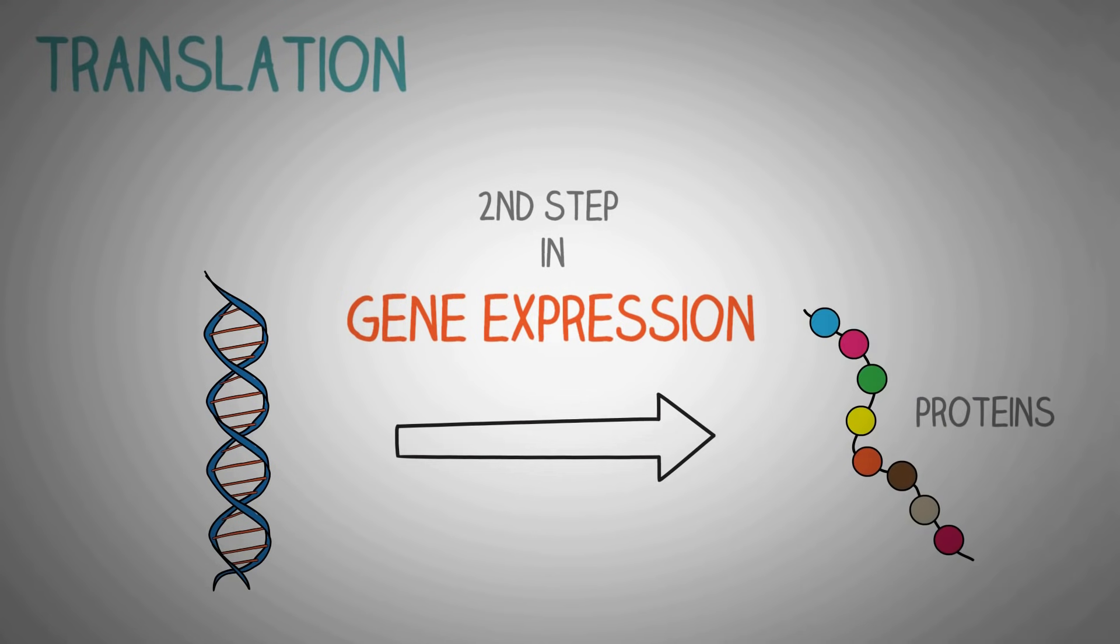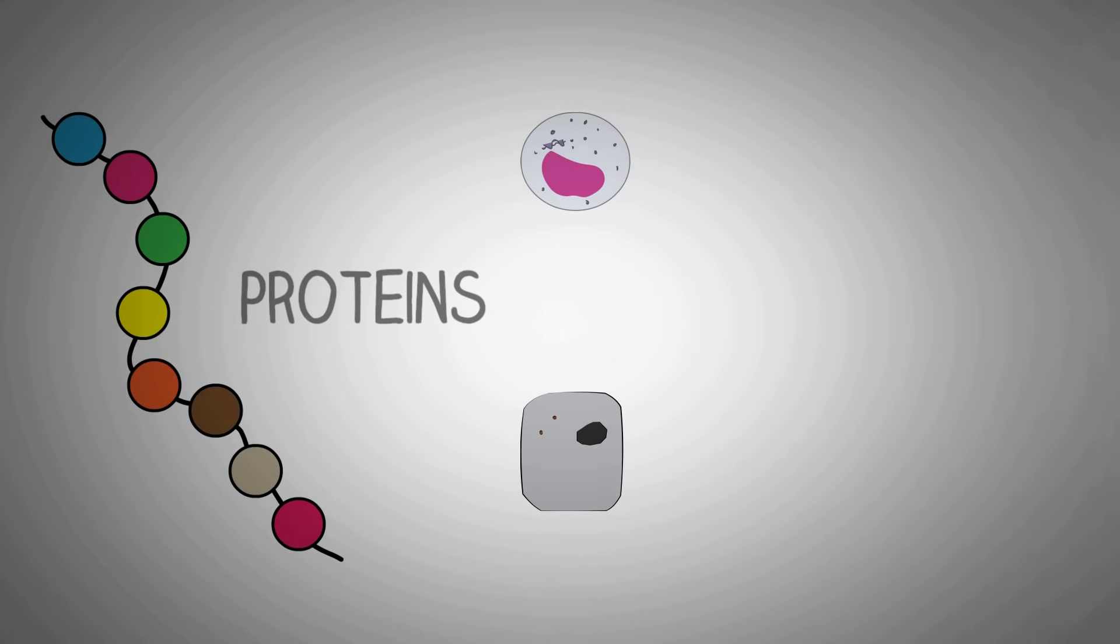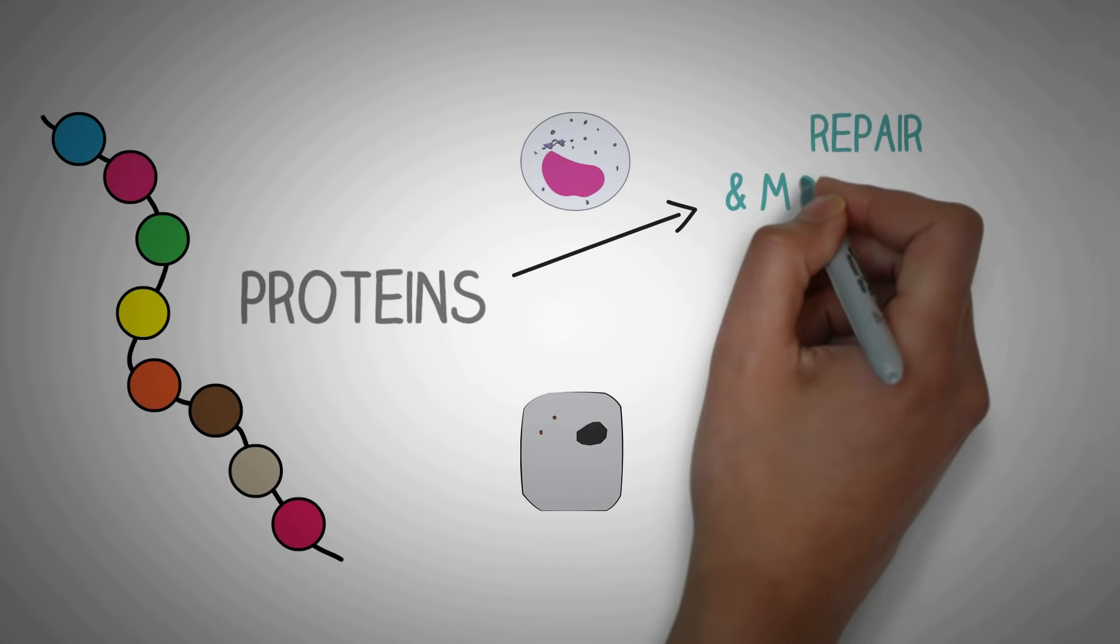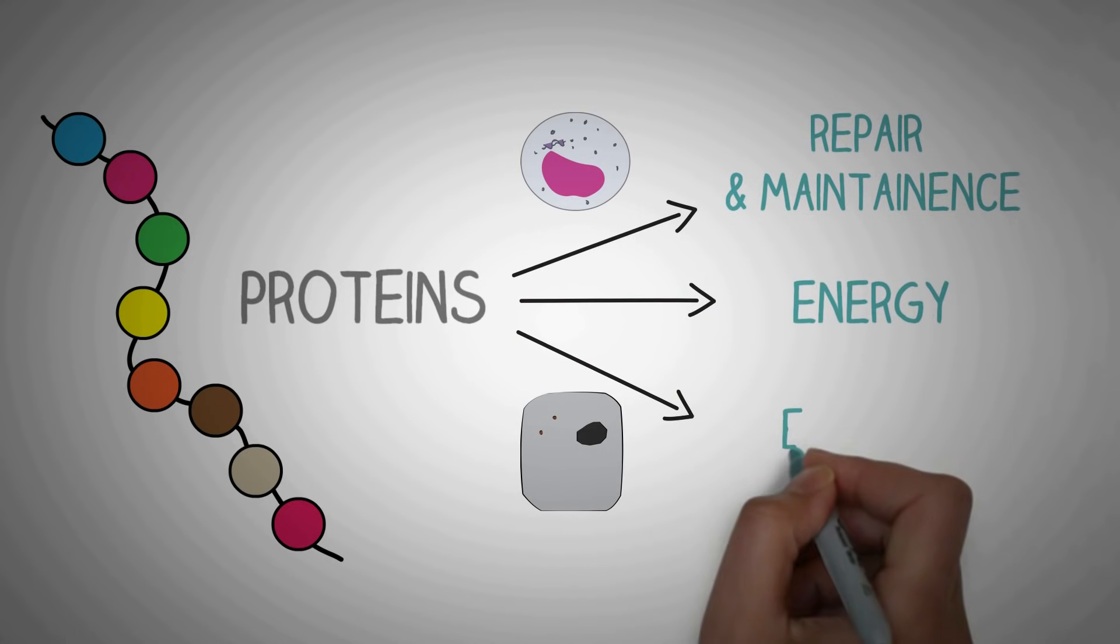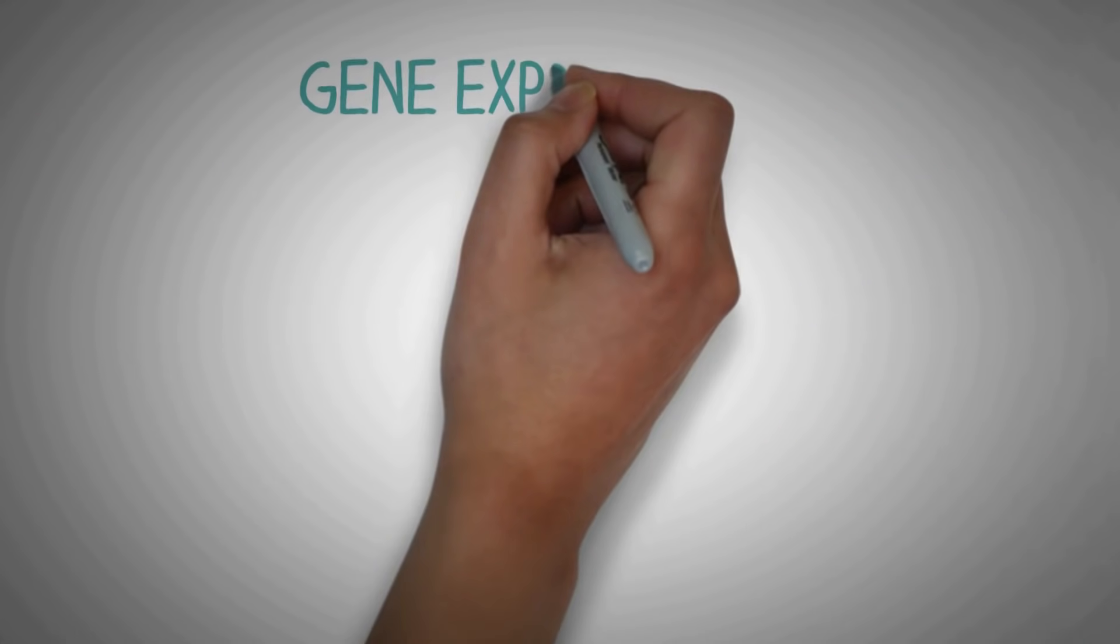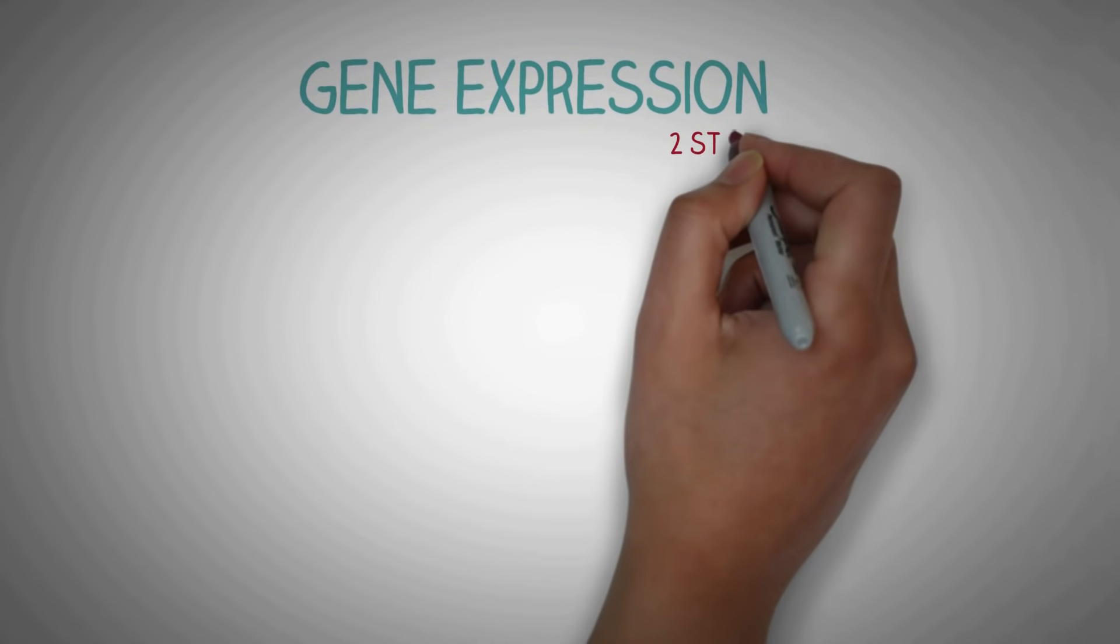These gene products are mainly proteins which have numerous functions in your cells like repair and maintenance of cells, energy synthesis and enzymatic actions on biochemical reactions. Gene expression essentially occurs in two steps.